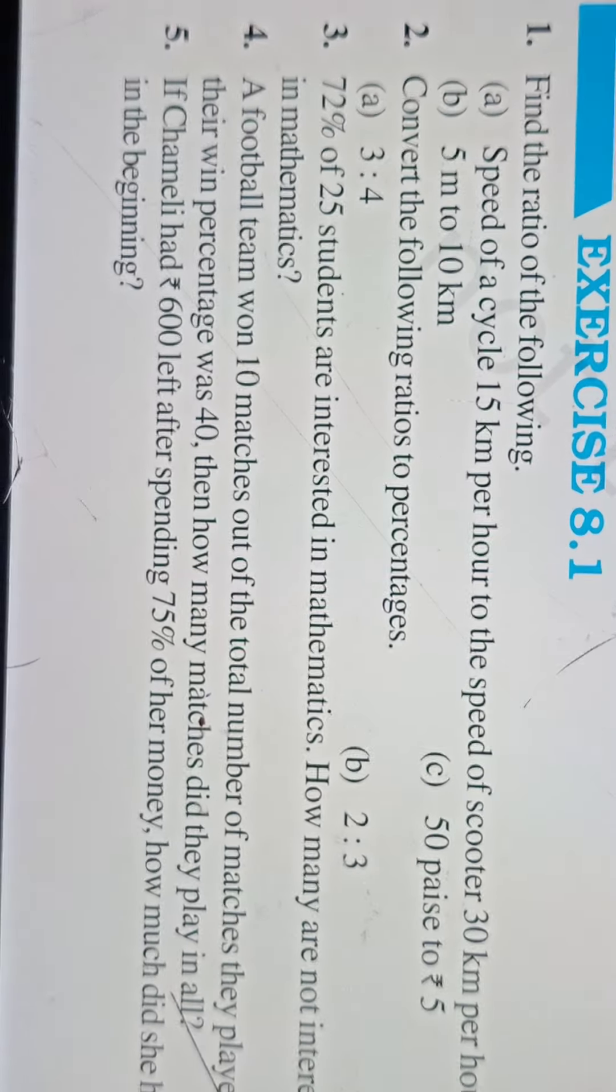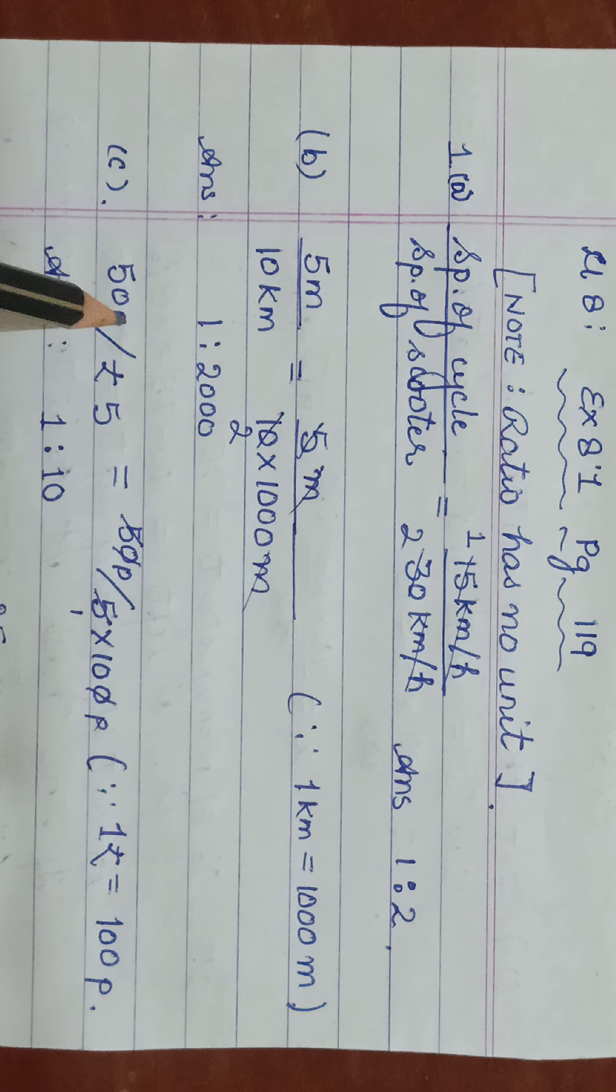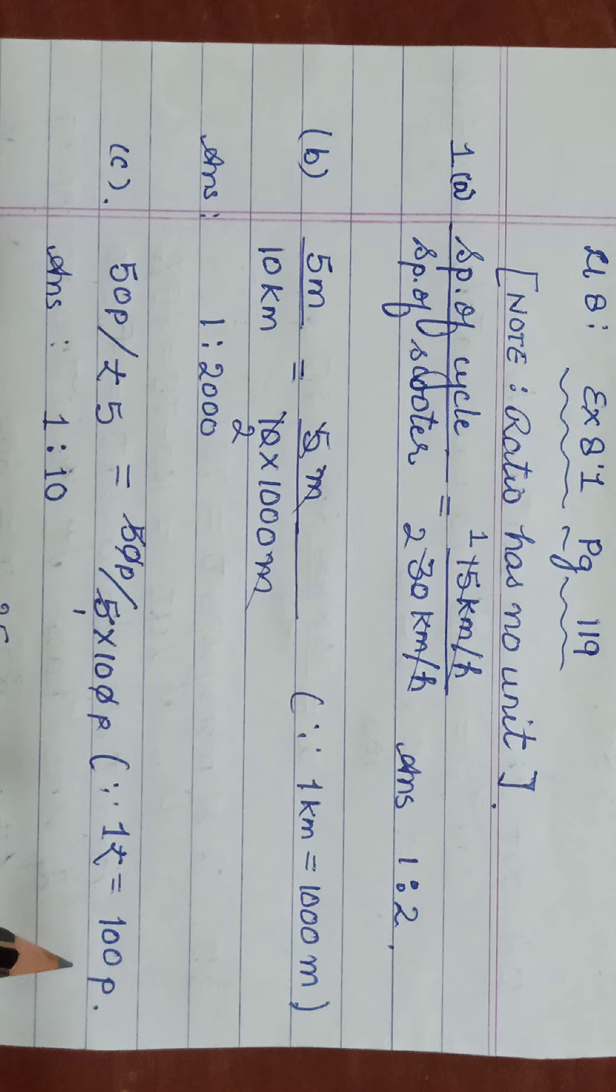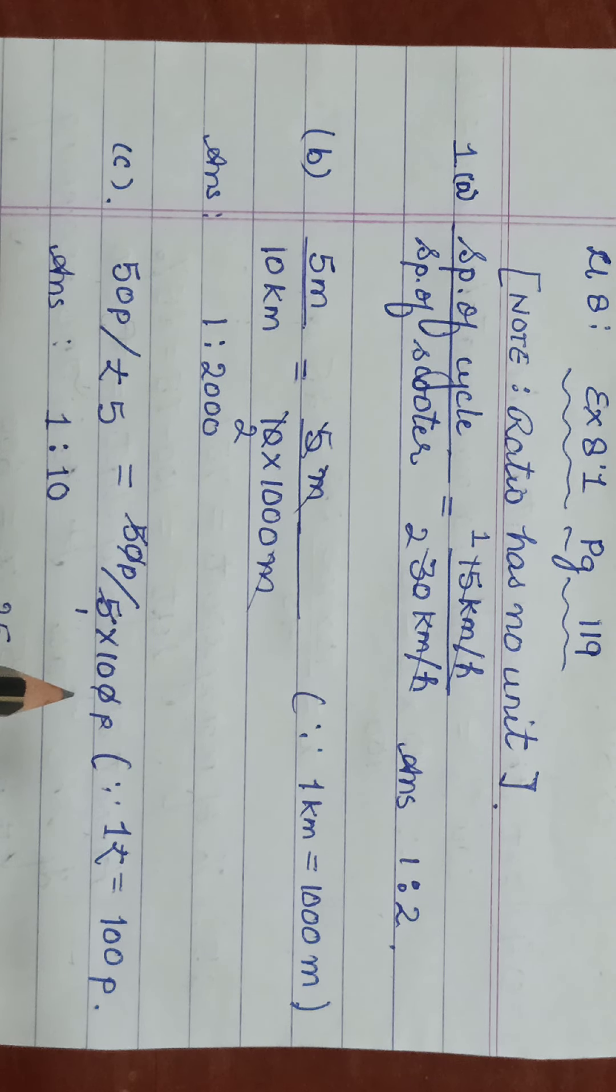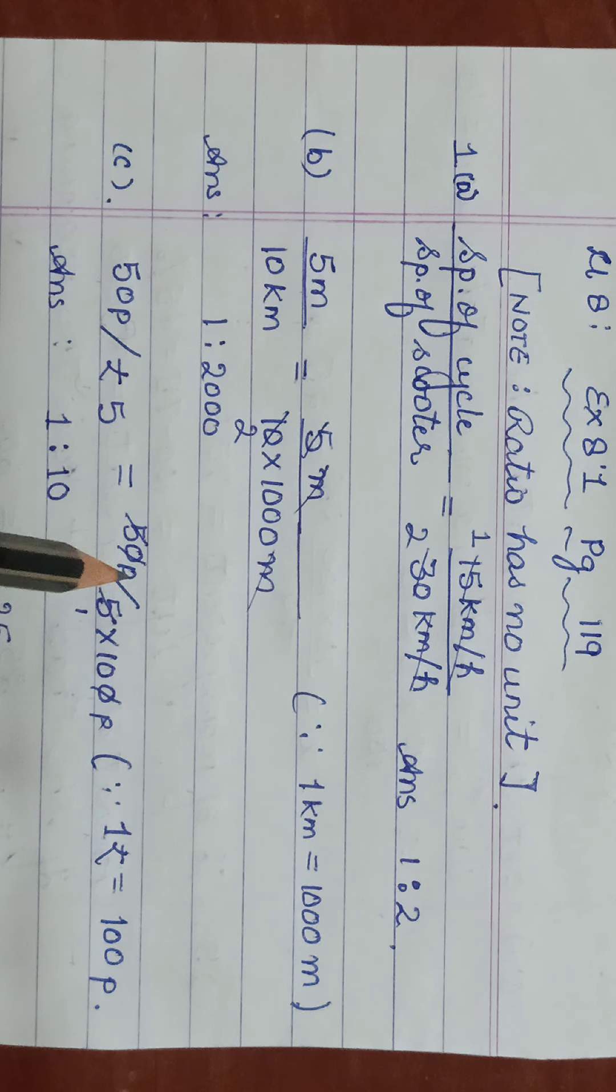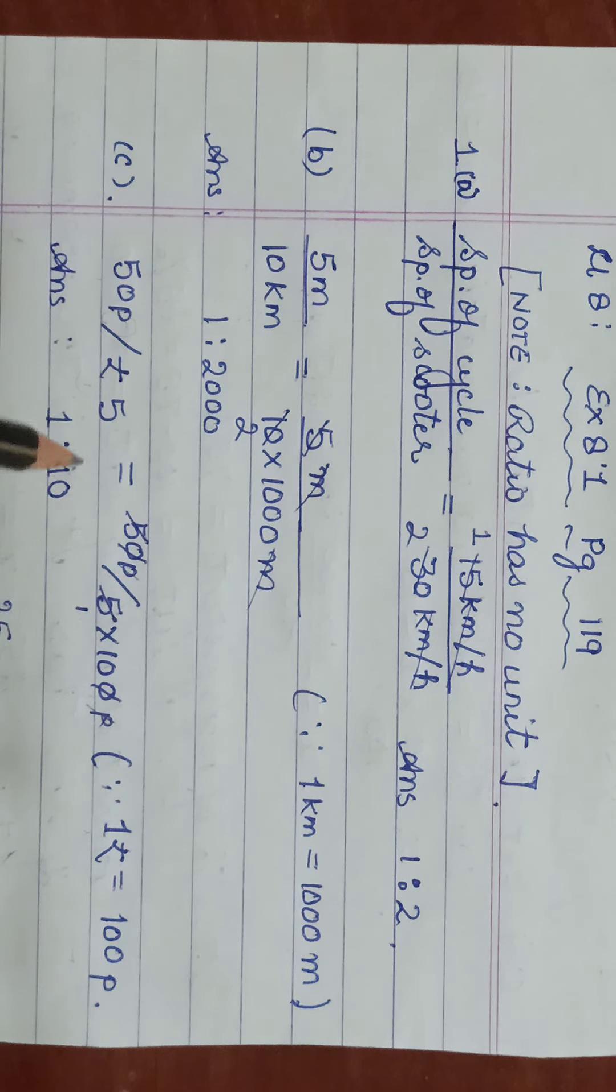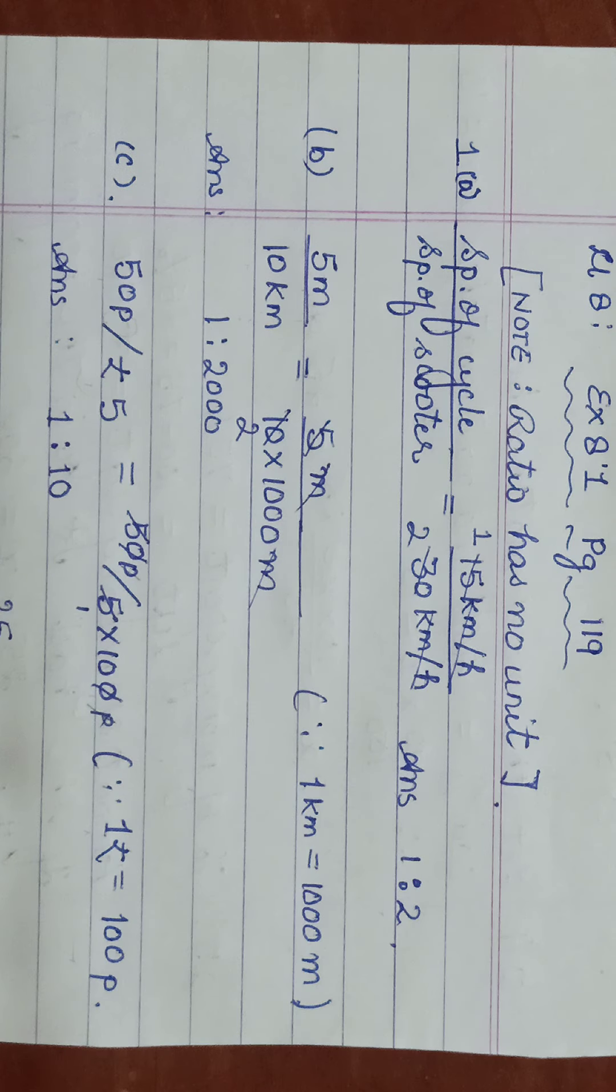Then next is 50 Paisa to rupees 5. So 50 Paisa upon rupees 5. Again, unit is different. Here the Paisa, here the Rupee. We will convert this also to Paisa by multiplying it by 100. 1 of the 0 gets cancelled, 5 and 5 gets cancelled. We are left with 1 in numerator again. Paisa, Paisa, same unit will be balanced. Numerator is only 1, denominator we are left with 10. So the ratio is 1 is to 10.